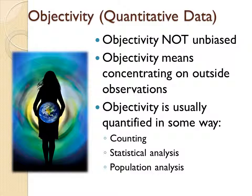You are trying to be an observer with as little of your own self involved, trying to see what you can tell with your senses. Objectivity is usually quantified in some way. You do objective studies in sociology trying to look at groups — you want to be able to count people and behaviors so that you can apply statistical analysis. Statistics is a way of looking at a sample of a population and learning things about the population. In the United States we count the entire population every 10 years.